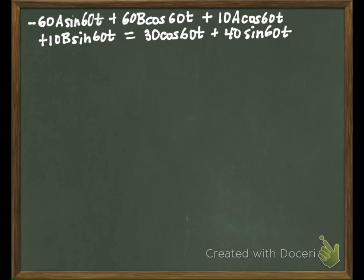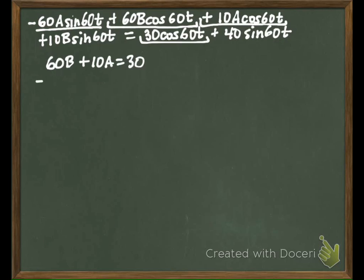So when we start matching up coefficients, let's start with cosine. We've got a 60B right here and then we've got a 10A right here, and then over here we have a 30. So our first equation is going to be 60B + 10A = 30. And then we'll look at sine. So for sine we have a -60A, a positive 10B, and then on the other side we have a 40.